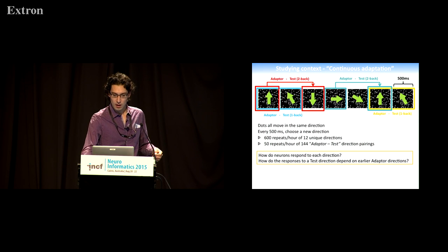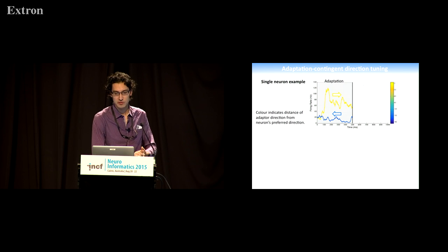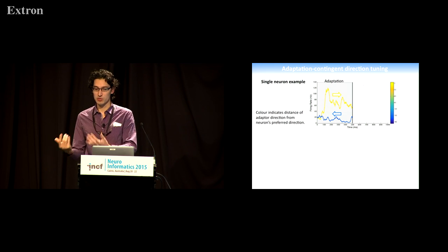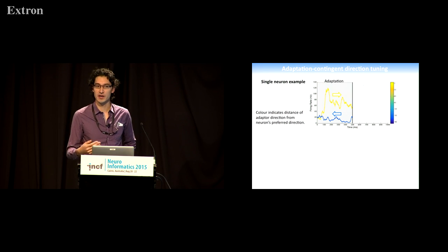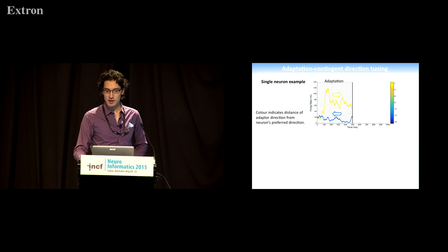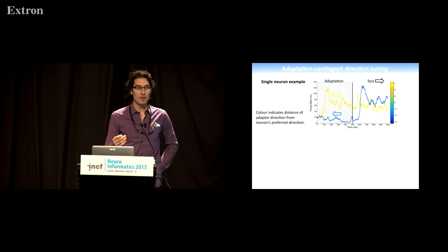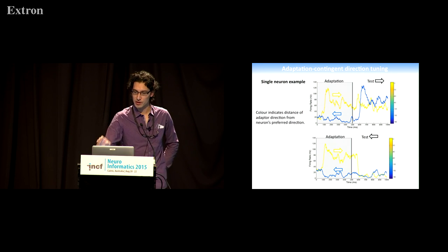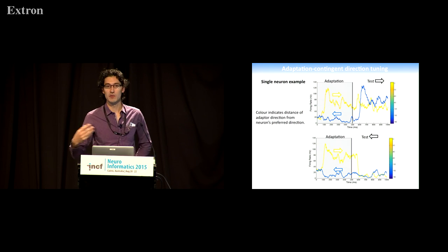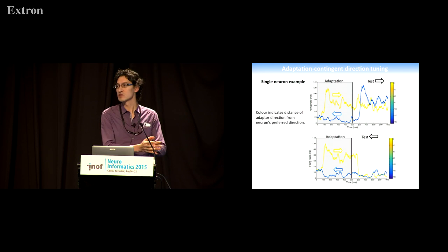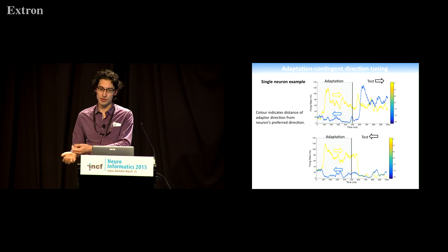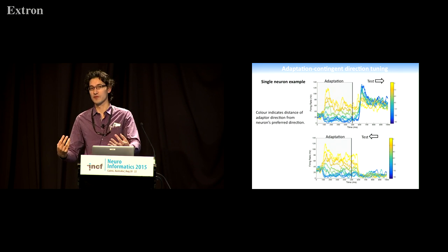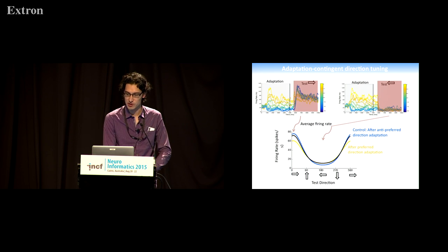I'll start by showing a single neuron example. Here I've got the responses of a single neuron to two different adaptation directions. We talk about neurons having a preferred direction—the yellow arrow indicates that the adapter is in the near preferred direction, evoking a higher firing rate from this neuron. If we then present a stimulus moving in the neuron's preferred direction, you can see that the response to that test stimulus is affected by the previous adapting stimulus, and that's true if we also have adapters moving in the same direction but our test is moving in the opposite direction. The stimulus presented during the adaptation period affects the response of the neuron to the test period. We can do this for all 12 possible adapters in association with each test period, so ultimately we get 144 of these pairings.